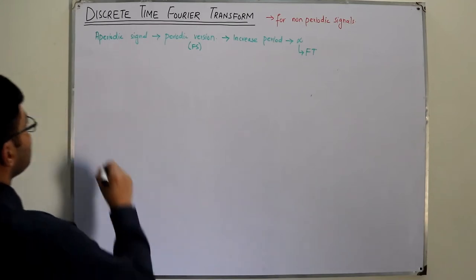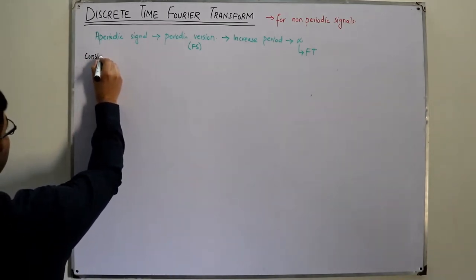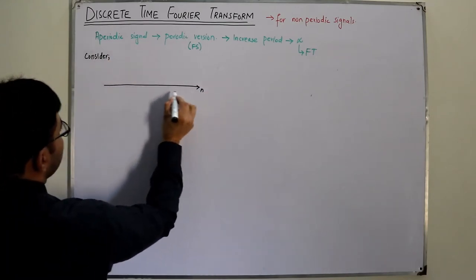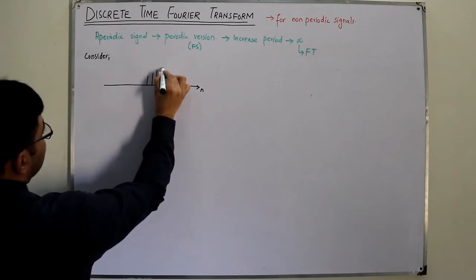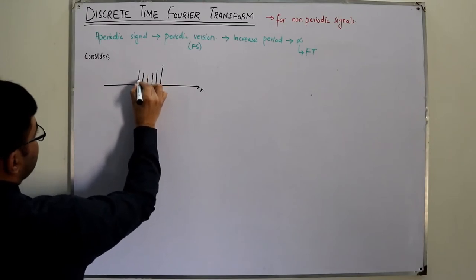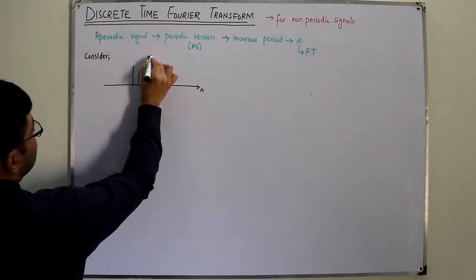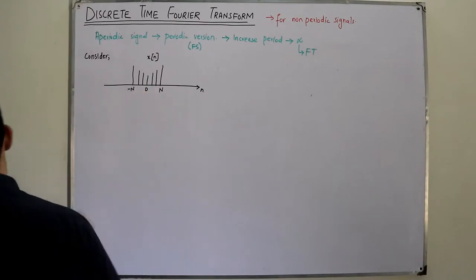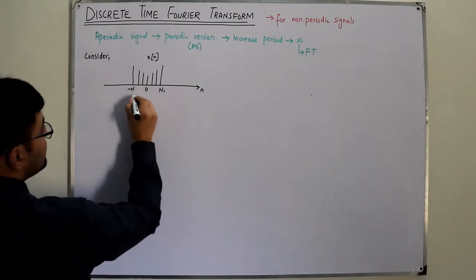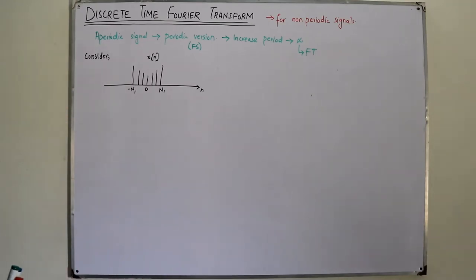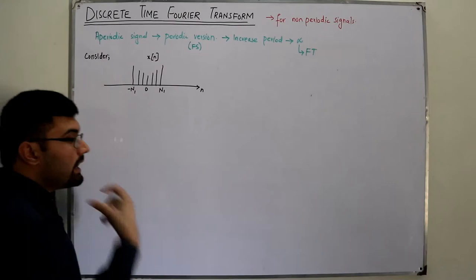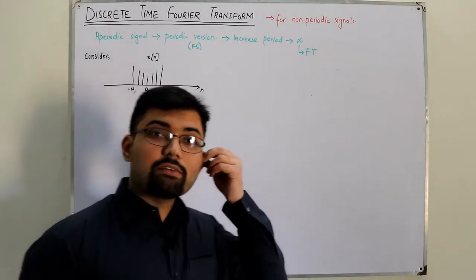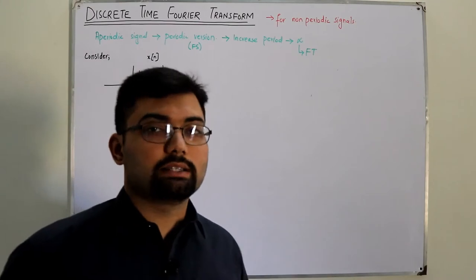Let's consider a general aperiodic signal x[n]. If this is my n-axis and this is my signal x[n], an aperiodic signal — with n₁ on one side and negative n₁ on the other side — the goal is to represent x[n] in terms of complex exponentials, in the form of exponentials of jω.